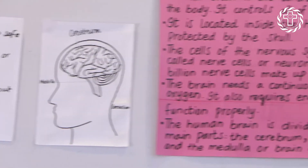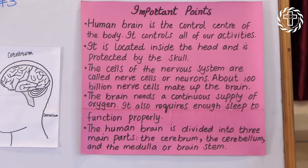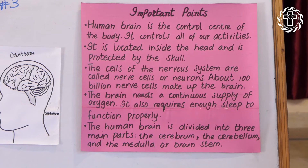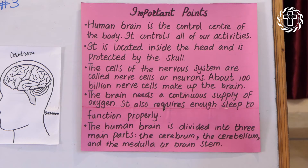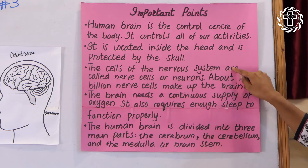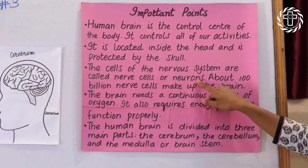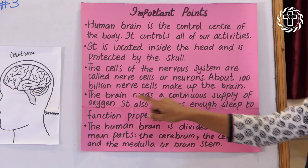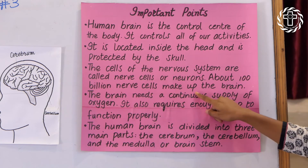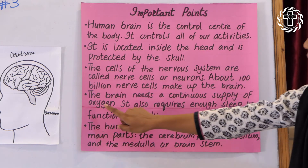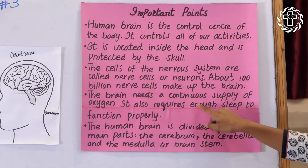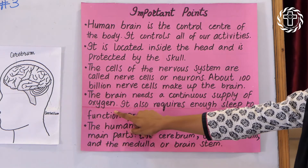Important points: The human brain is the control center of the body. It controls all of our activities. It is located inside the head and is protected by the skull. The cells of the nervous system are called nerve cells or neurons. About one hundred billion nerve cells make up the brain.